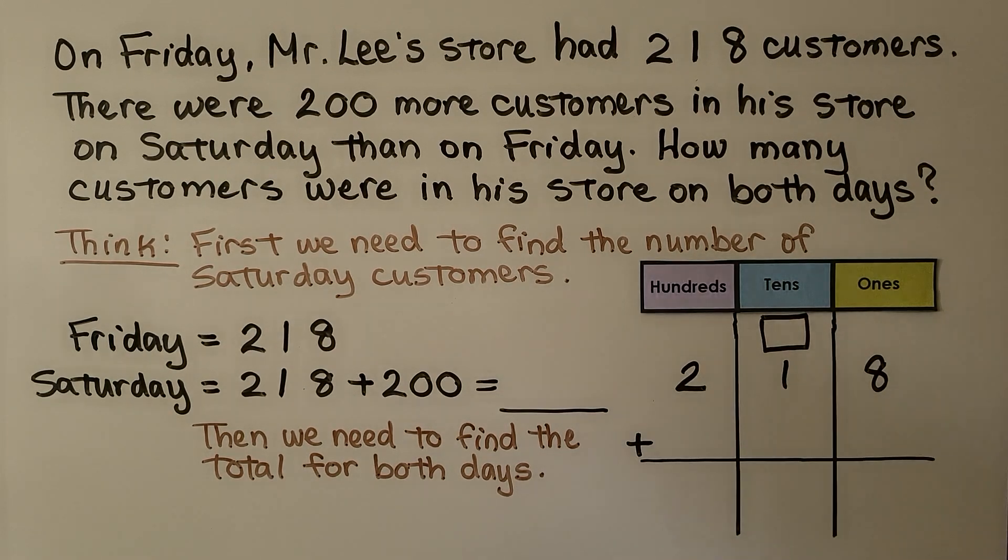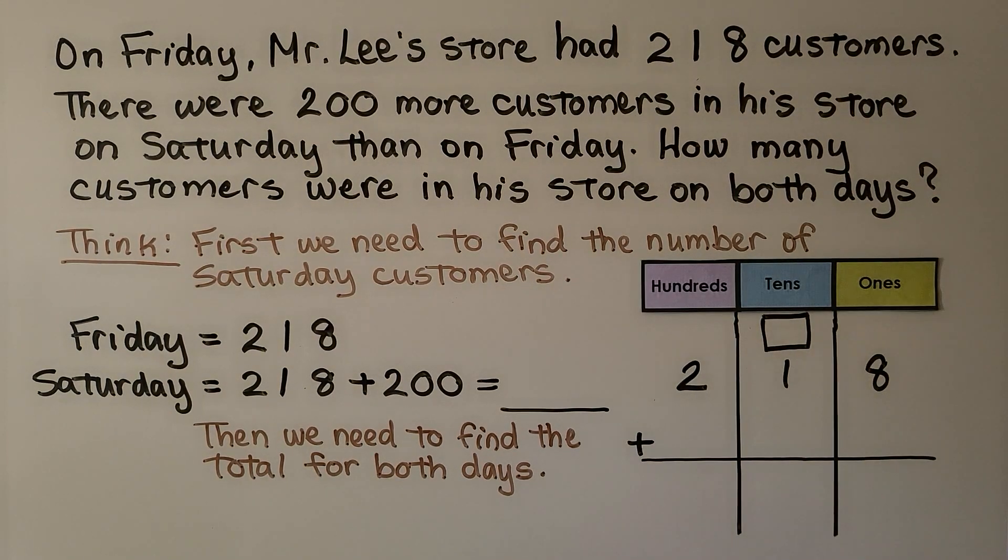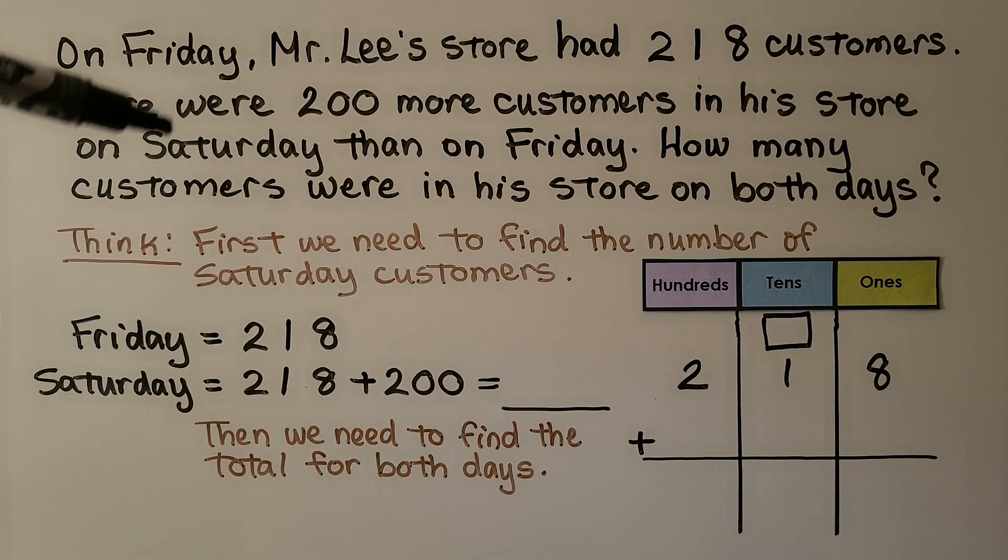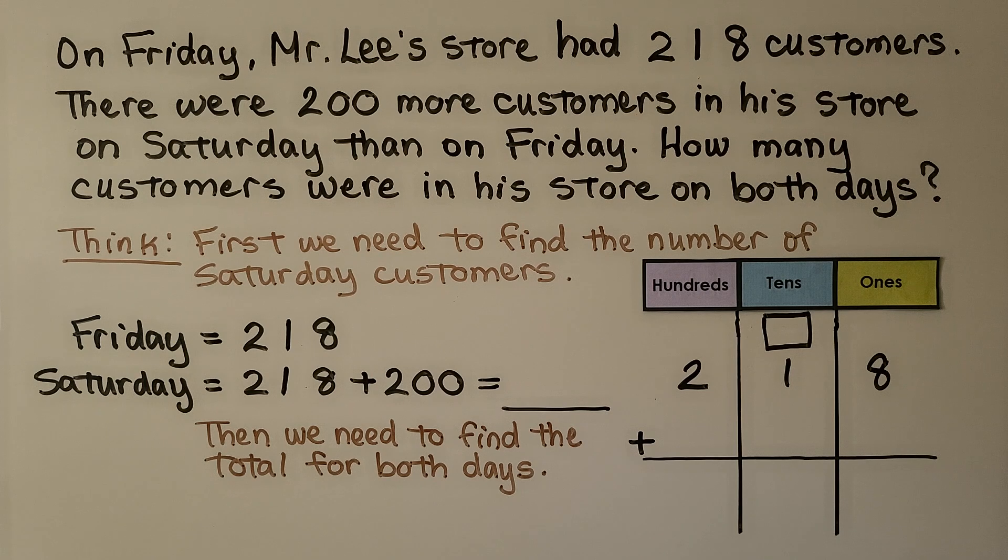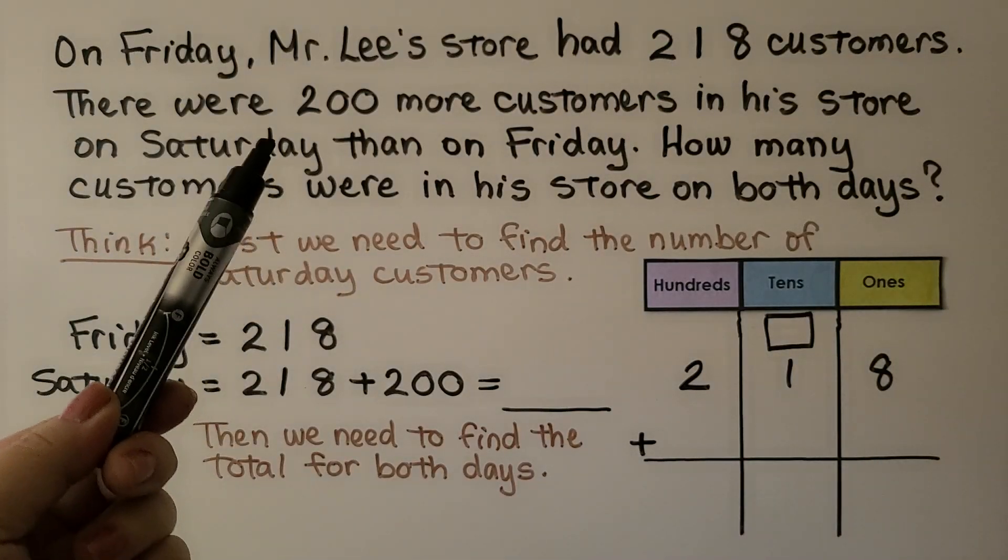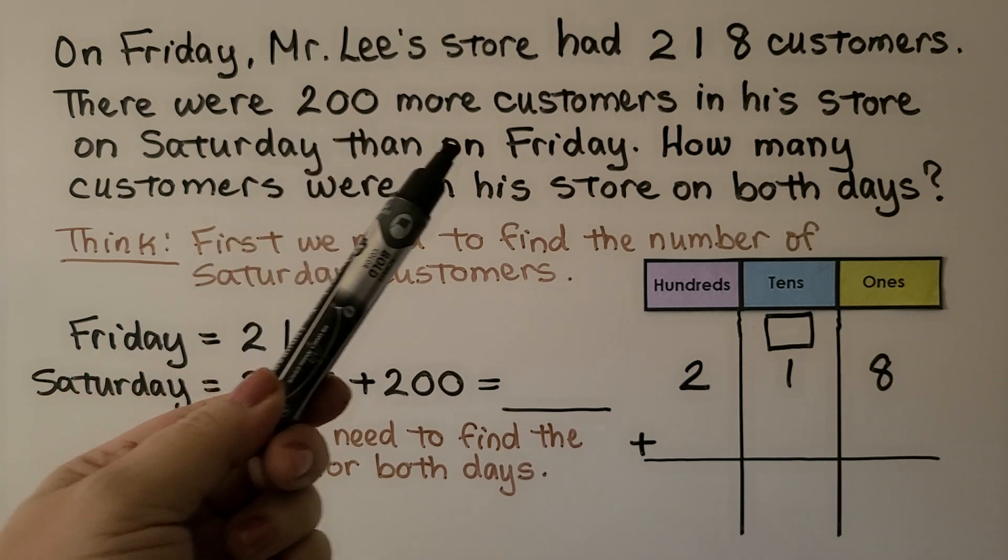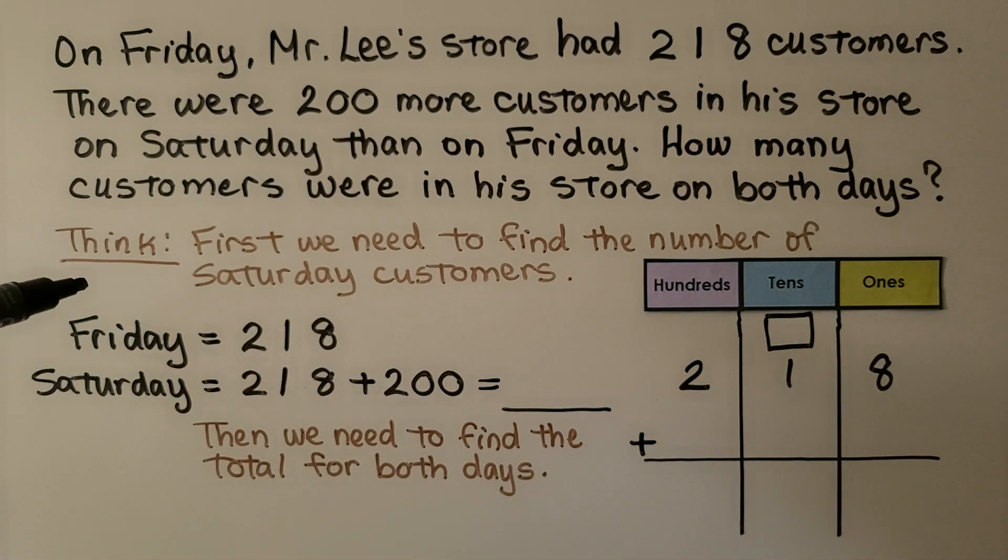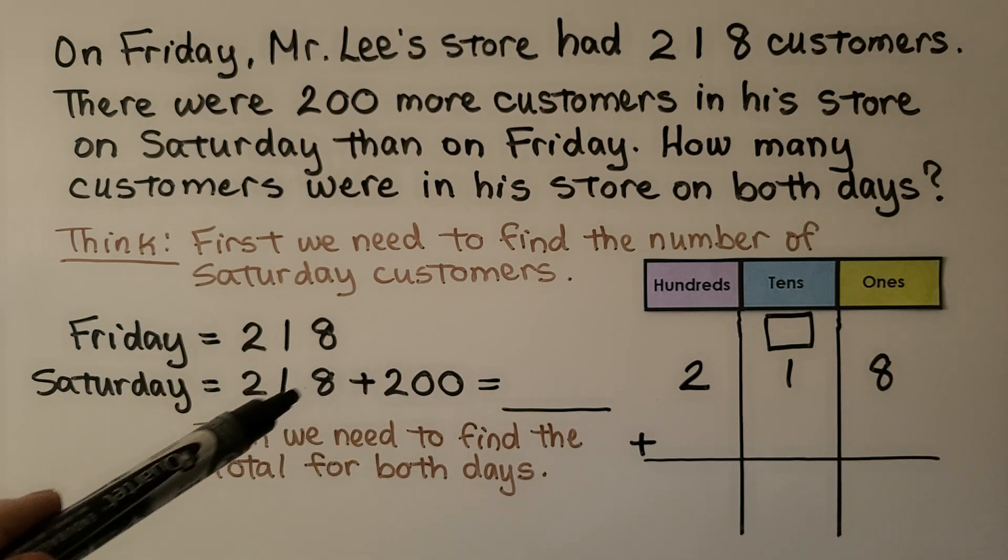On Friday, Mr. Lee's store had 218 customers. There were 200 more customers in his store on Saturday than on Friday. How many customers were in his store on both days? So we think first we need to find the number of Saturday customers. It says 218 was Friday, but Saturday was 200 more than on Friday. So Friday is 218.